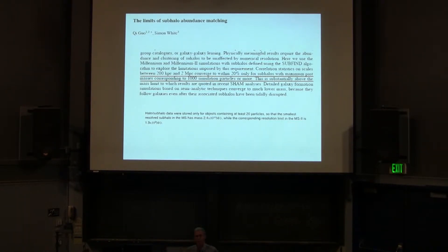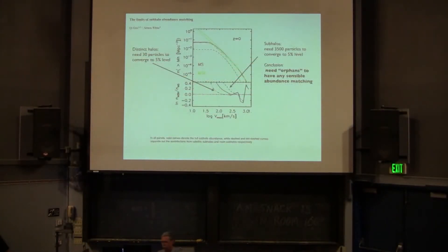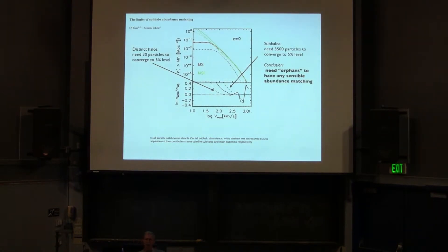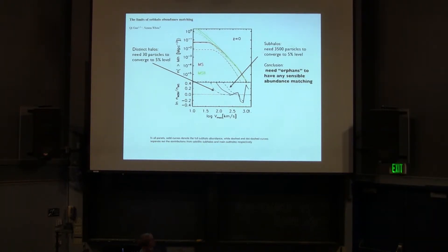We have two simulations: one is a baseline producing the true answer, and one with much worse resolution. You ask, what is the convergence between them — how many particles do you need to get convergence? The baseline is Millennium II, which is a much smaller volume but much better resolution. You compare it with Millennium I, which is low resolution. We plot Vmax here: 200 km/s and 3,000 km/s. We do the ratio of number of objects — satellites and distinct halos.